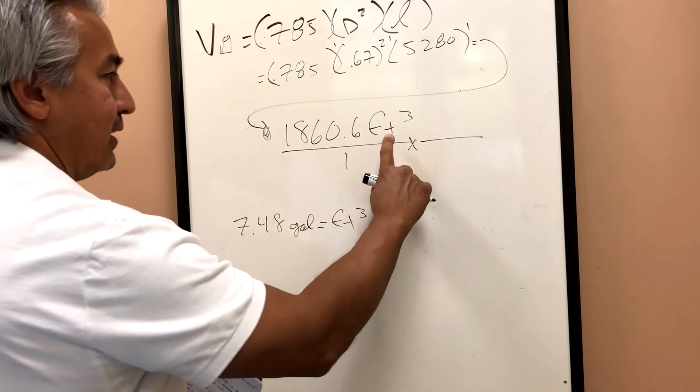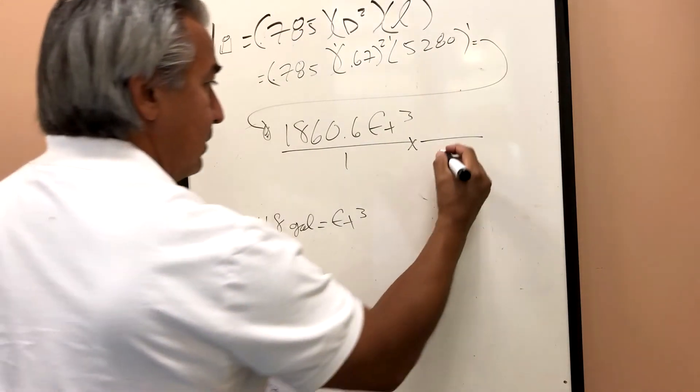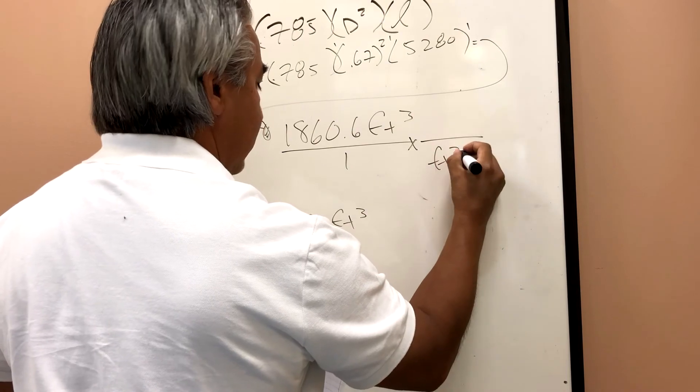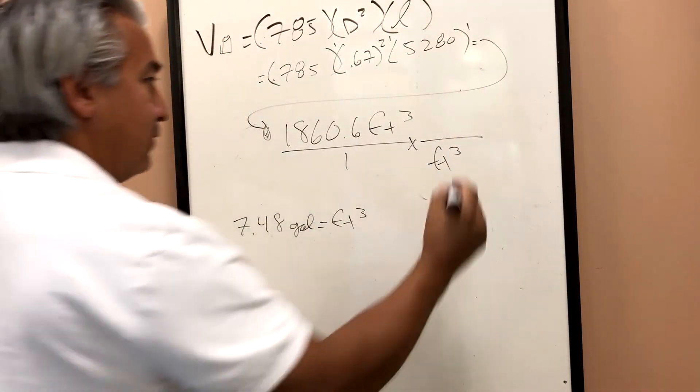And so I can see that my cubic feet are here. And so I want to cancel them out. So I'll put them on the bottom, which means this empty space, I have to put my 7.48 gallons there.